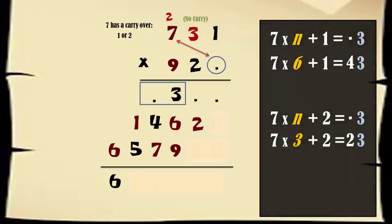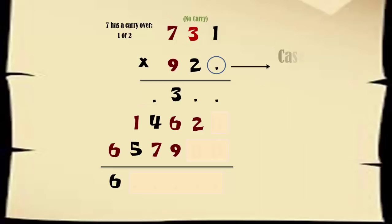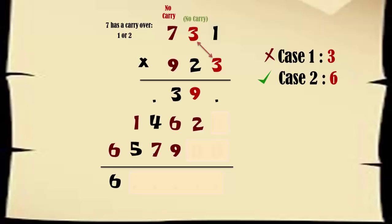So the first digit here is either 3 or 6. Case 1, if it's 3, then 3 times 3 won't give any carryover to the next digit. That's why this case is invalid. So the only possible value of this digit is 6.